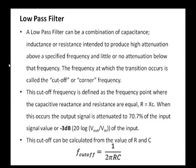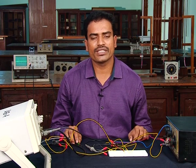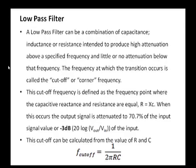A low-pass filter can be a combination of a resistor, capacitor, or inductor. It is intended to produce high attenuation for a specified frequency and little or no attenuation below that specified frequency. The frequency at which this transition takes place is called the cut-off frequency or corner frequency. The cut-off frequency is defined as the frequency point where the capacitive reactance equals the resistance, that is, R equals X_C. When this occurs, the output signal is attenuated to 70.7% of the input signal. The cut-off frequency can be calculated using the formula: F_cutoff = 1 / (2πRC).